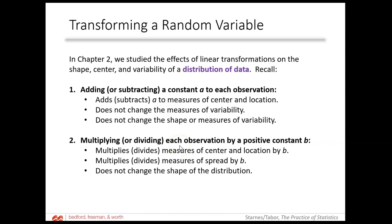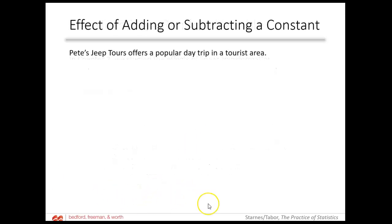Multiplying or dividing each observation by a positive constant B — multiplying and dividing are the same idea in math — is going to multiply the location of the center by B. The mean acts exactly how you think it's going to, which the book calls 'playing nice.' The spread is also going to be multiplied by that factor of B, but the shape will not change. So as far as skewedness or symmetry, the shape stays the same — that was back in chapter two.